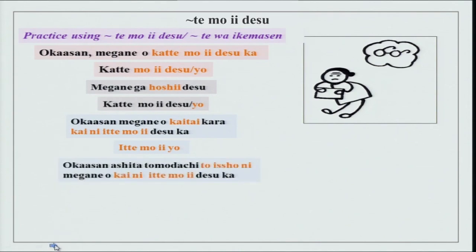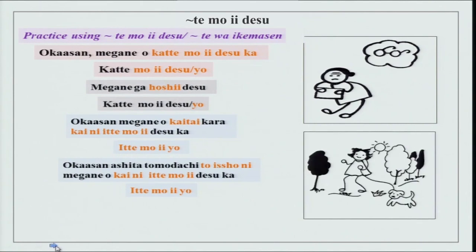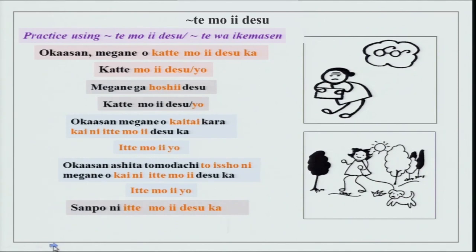Okaasan, ashita tomodachi to issho ni megane wo kai ni itte mo ii desu ka? And okaasan can say itte mo ii yo. Then there is another picture of going for a walk with a dog: sampo ni itte mo ii desu ka? Douzo — a simple answer. Or: douzo ii yo, douzo itte kudasai, douzo itte mo ii desu yo — it is alright if you go.